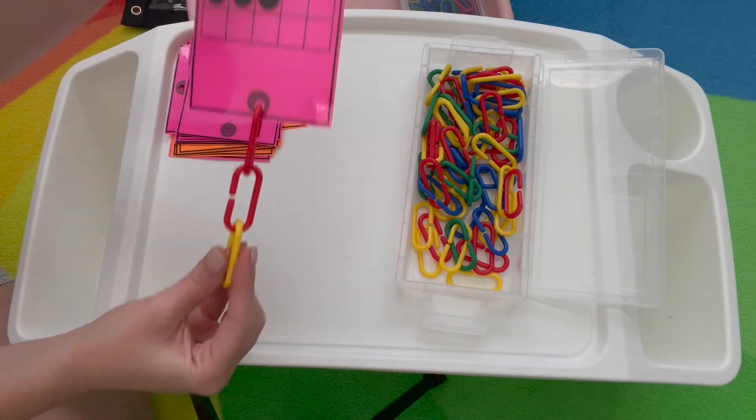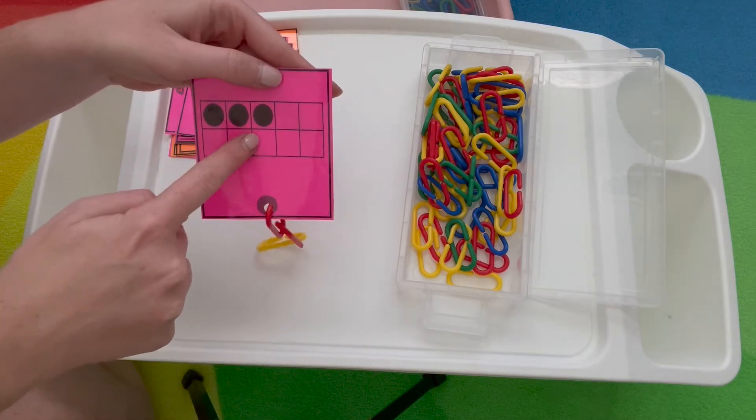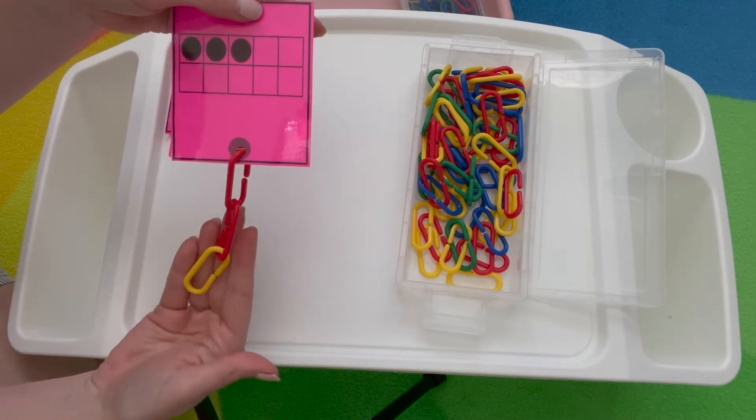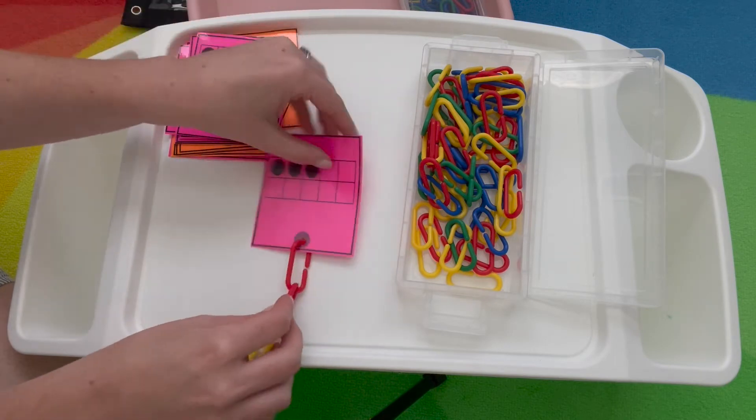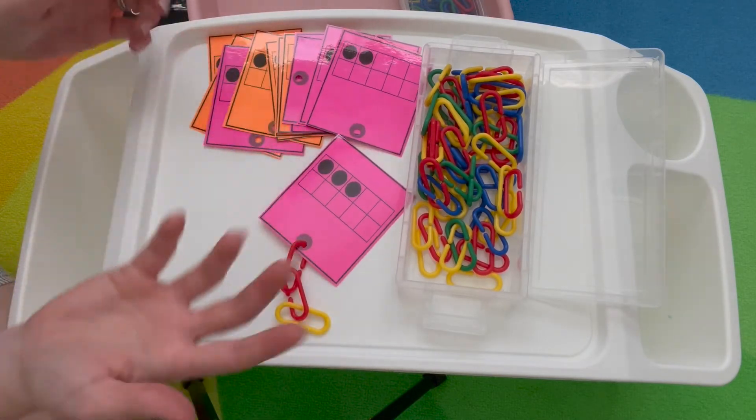Attach it and then double check. One, two, three. One, two, three. Both of those show three. And you can talk about how the model on here is on a tens frame and how you made your model using the links. So continue until they've built all the sets or until your center time is finished.